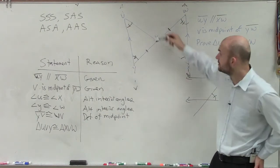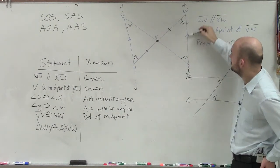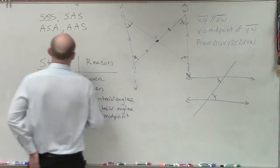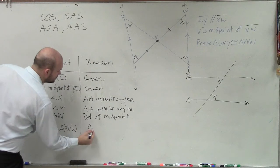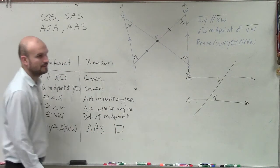It's angle angle side, right? You go to angle or angle to angle to side. Angle to angle to side. So yes, these two triangles are congruent by angle angle side. Ta-da. Good job. Good job. There you go. You did it.